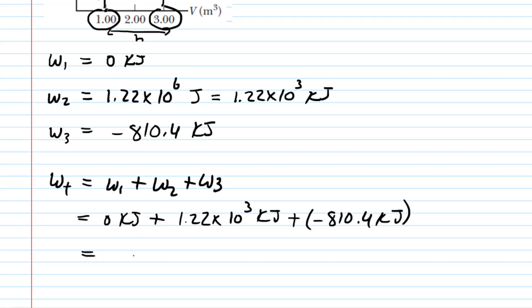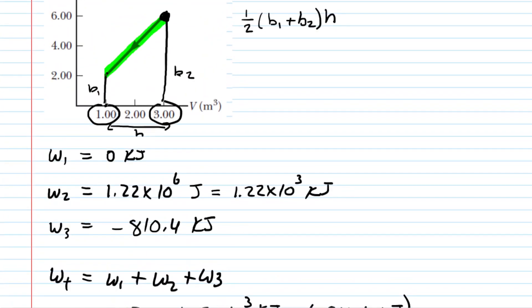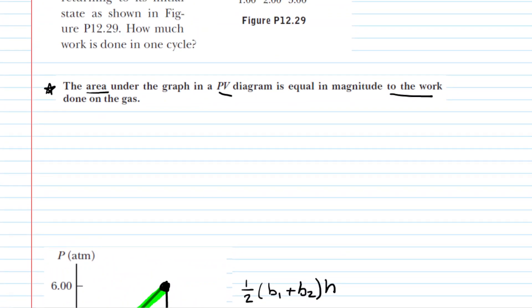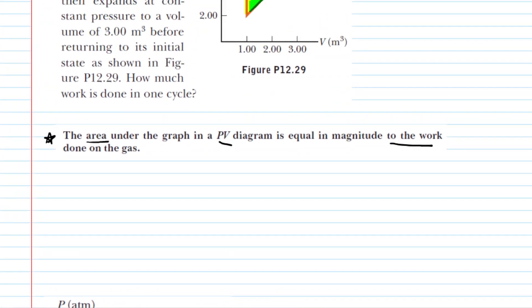And when you do so, you should get approximately 405 kilojoules. So this is the total work done in those three processes. So just remember that when you have a PV diagram and you're trying to calculate the work done on the gas, all you need to really do is break it up into segments and find the area underneath that PV graph.